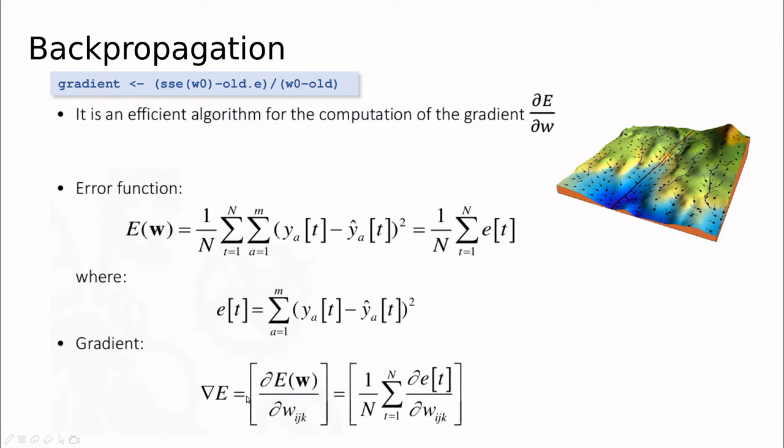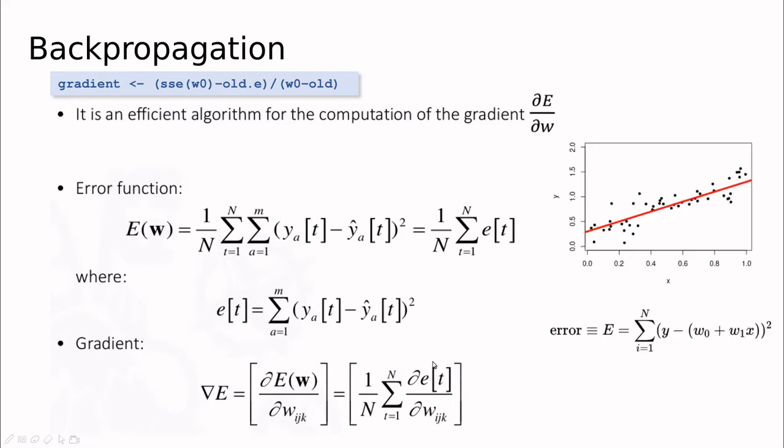So if we take the gradient, basically what we are doing is creating a new matrix in which each element of the matrix is the partial derivative of the error with respect to this weight.